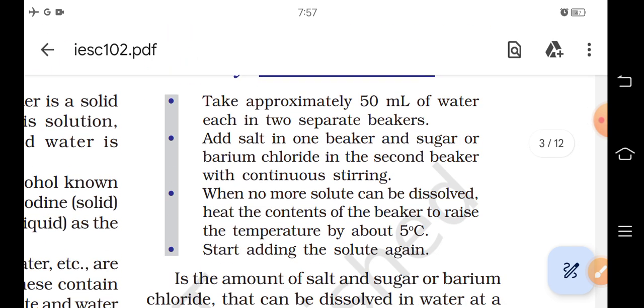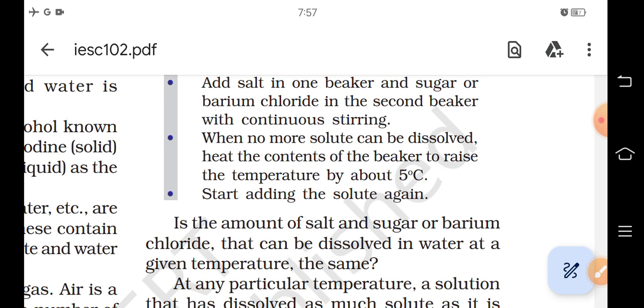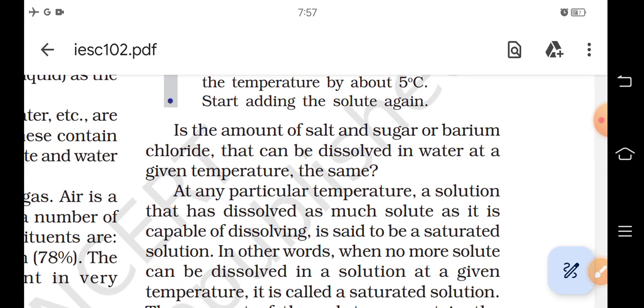Activity 2.3: Take approximately 50 ml of water each in two separate beakers. Add salt in one beaker and sugar or barium chloride in the second beaker with continuous stirring. When no more solute can be dissolved, heat the contents of the beaker to raise the temperature by about 5 degrees Celsius. Start adding the solute again. Is the amount of salt and sugar or barium chloride that can be dissolved in water at a given temperature the same?